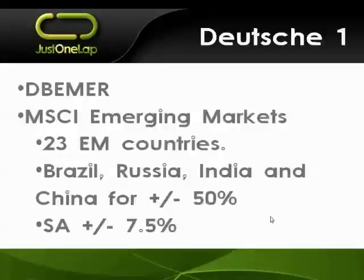Moving on to the Data Bank ones. Their emerging market ETN is a general, generic emerging market product. It's tracking the MSCI Emerging Markets index, which includes 23 different countries. You'll hear from time to time that South Africa or some other country has been upgraded or downgraded in that particular index. As it stands right now, South Africa is around 7.5%. Brazil, Russia, India, and China make up about 50% of that index. So your BRIC countries — and if you bring South Africa in to make it BRICS — we're looking at about 58% in those five alone, with the other 18 countries making up some 42%.